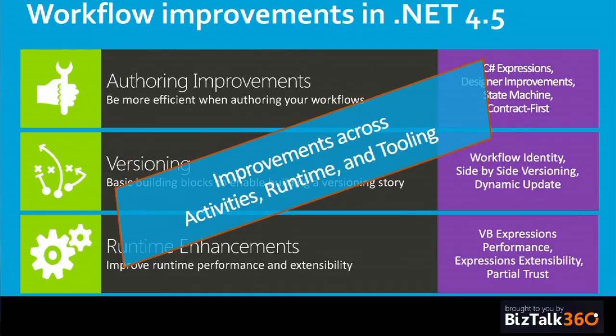Quickly on what was added with .NET 4.5: a lot of authoring improvements, and yes, we now have C#. We didn't have C# before — it had to be VB.NET. We also have the state machine, which is a pretty interesting concept where you don't have a sequential-only flow. There's also contract-first support, improved versioning for running multiple versions side by side, and some performance enhancements.